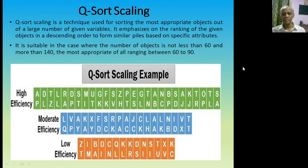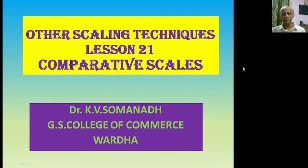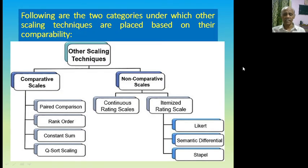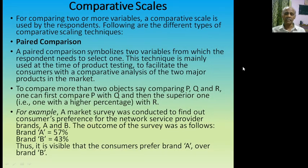I hope you have gone through all the things. Let us recap. In this lesson, you have learnt about the comparative scales as a part of other scaling techniques. The other scaling techniques are divided under two categories: comparative scales and non-comparative scales. Under the comparative scales, we learnt about paired comparison, rank order, constant sum, and Q-Sort scaling. In paired comparison, two objects are compared. If there are more than two, we compare two objects at a time.